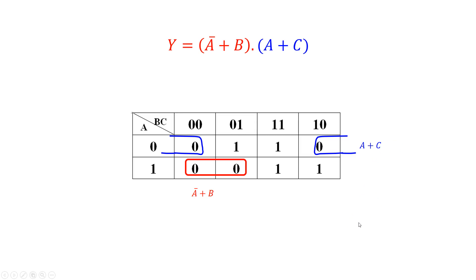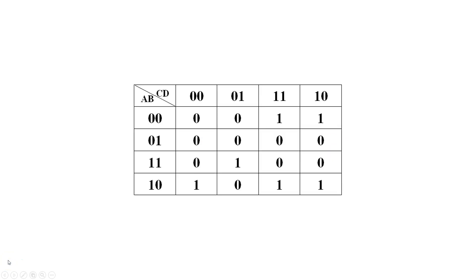Next, let's do a four-variable Karnaugh map with variables A, B, C, D — 16 cells in total. Our goal is to find the largest possible groupings of zeros. We have one group of four where A equals zero and C equals zero, so we write that as A or C.